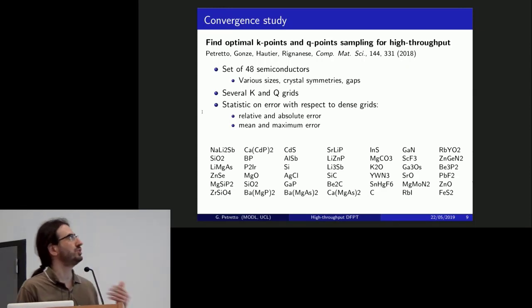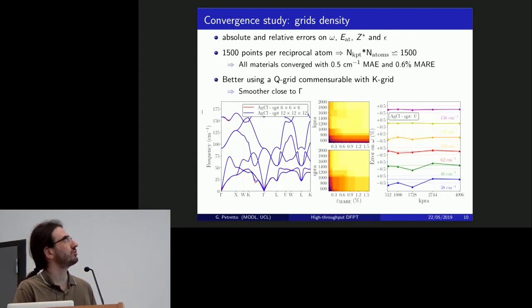And the first thing that we did to approach the running of high-throughput calculations was to take on the problem of the accuracy of the results. This came up before with the comparison with the database from Phonopy. And we actually tried to get the results as accurate as possible. To do this, we made a convergence study on k-points and q-points grids. We basically considered highly converged grids and did all sorts of statistics on the errors—relative, absolute, mean, maximum—and comparing basically the quantities that we wanted to obtain.